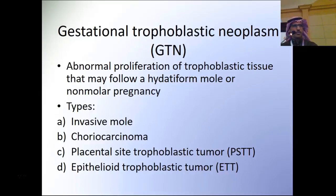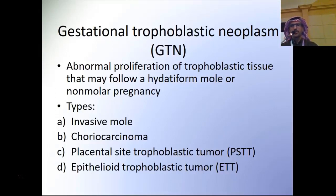There are four different types of gestational trophoblastic neoplasm: invasive mole; choriocarcinoma, which is the most common and usually associated with high levels of beta-HCG; placental site trophoblastic tumor; or epithelioid trophoblastic tumor, which is usually rare and associated with low levels of beta-HCG.